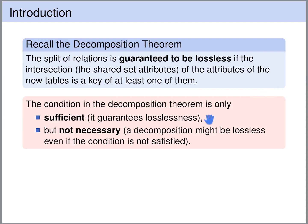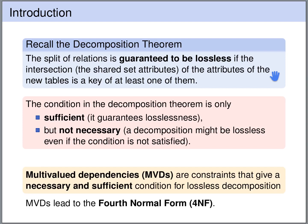However, this condition is not necessary in the sense that the decomposition might be lossless even if the condition is not satisfied. So the question is: what is a sufficient and necessary condition for a lossless split? And in order to get the sufficient and necessary condition, we need to look at what is called multivalued dependencies. They are a generalization of functional dependencies, and multivalued dependencies lead to a sufficient and necessary condition for lossless decomposition.